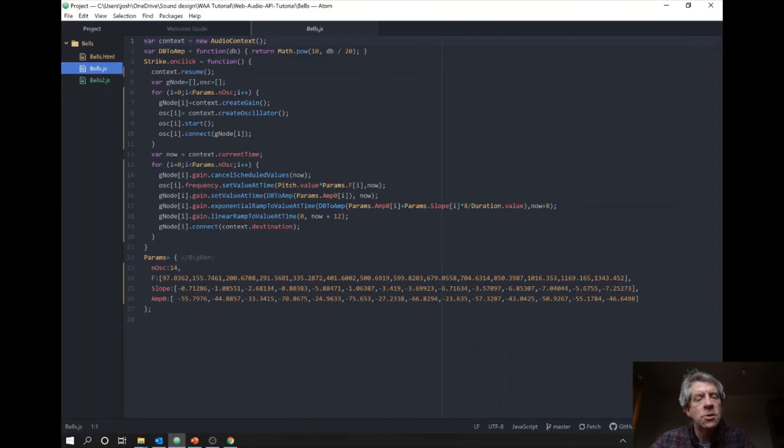Then if we look at the code for the bells, first down here I have the parameters. These are measured values from the recording of the bell, from analysis of that recording. There's 14—I just picked an arbitrary cutoff there—14 strong frequency components. We have the frequency values for each of those components, we have the slope (how quickly it's decaying over time), and we have the initial amplitude for each of them.